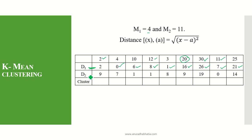Similarly, we calculate the distance for the second mean M2=11. Item 2 gives 9, item 4 gives 7, item 10 gives 1, item 12 gives 1, item 3 gives 8, item 20 gives 9, item 30 gives 19, item 11 gives 0, and item 25 gives 14. This is how the distance matrix is calculated.